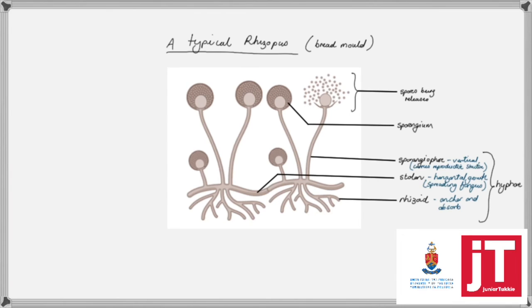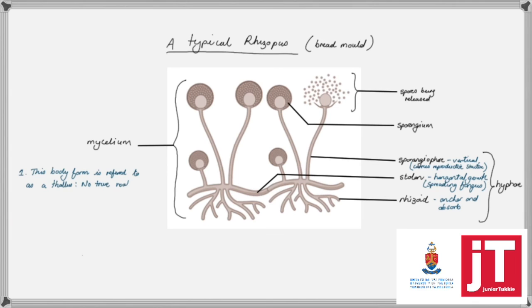The spores are being released by the sporangium, and this entire structure — which includes the sporangiophore, stolon, rhizoid, and sporangium — is all the mycelium body. So this large network of hyphae we refer to as the mycelium. This body form is referred to as a thallus, which is important terminology because a thallus implies that the structure does not have true roots, stems or leaves — so we wouldn't refer to any specific root, stem, or leaf-like structures in this organism.